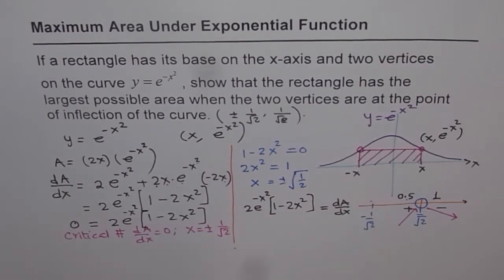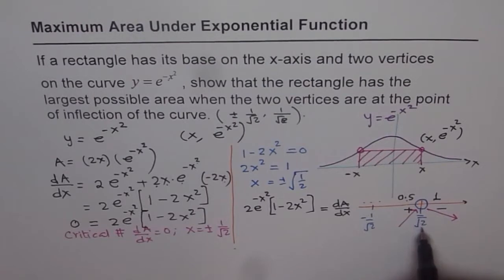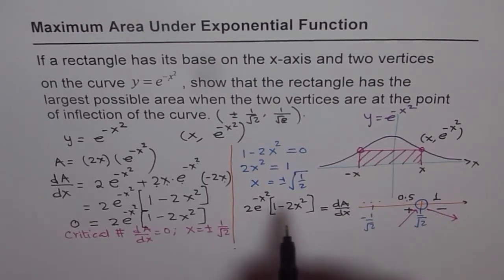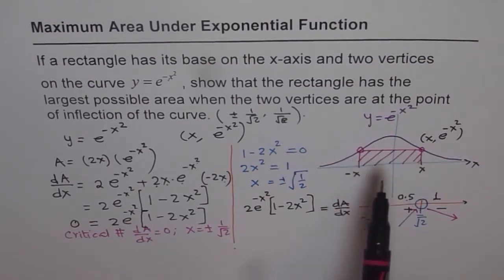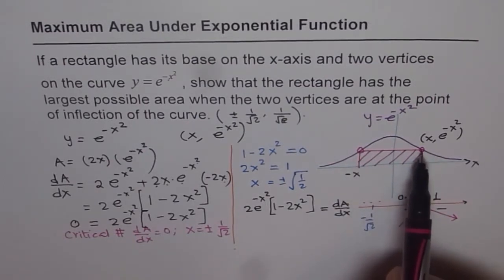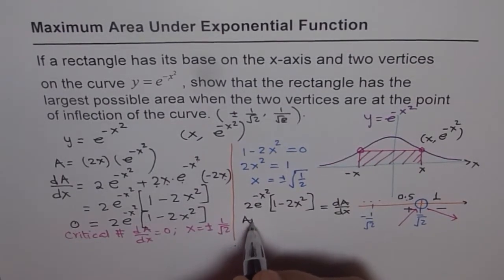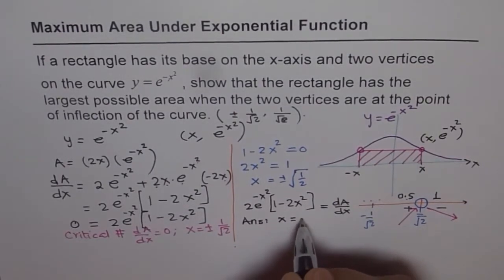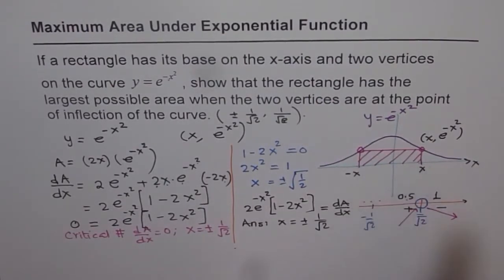Similarly, the same analysis applies to the negative critical point x equals minus 1 over square root of 2, giving the same result. So we get a maximum at x equals plus or minus 1 over square root of 2. Therefore, the maximum area of the rectangle is achieved when the vertices are at x equals plus or minus 1 over square root of 2.